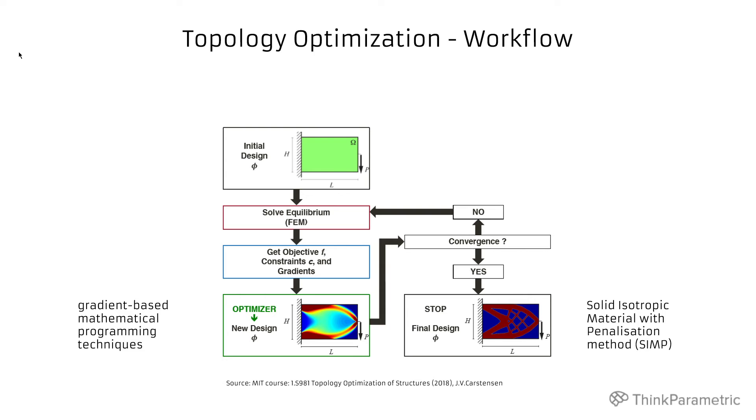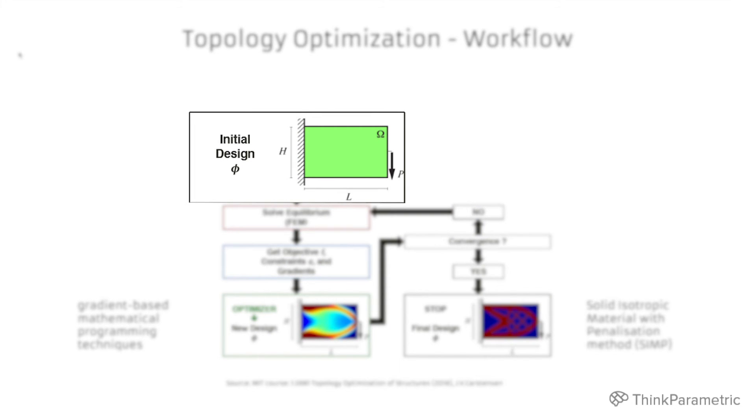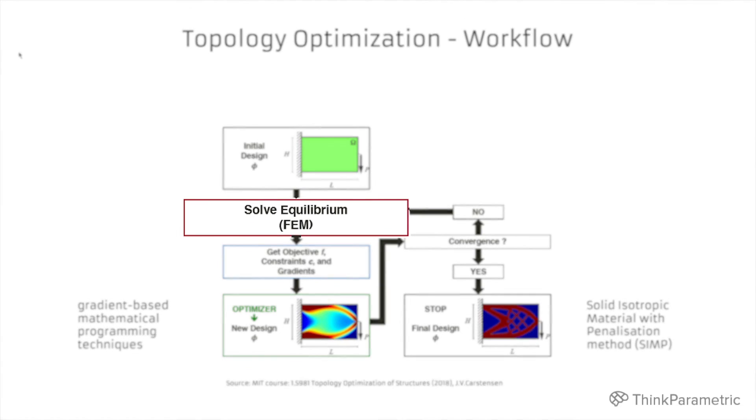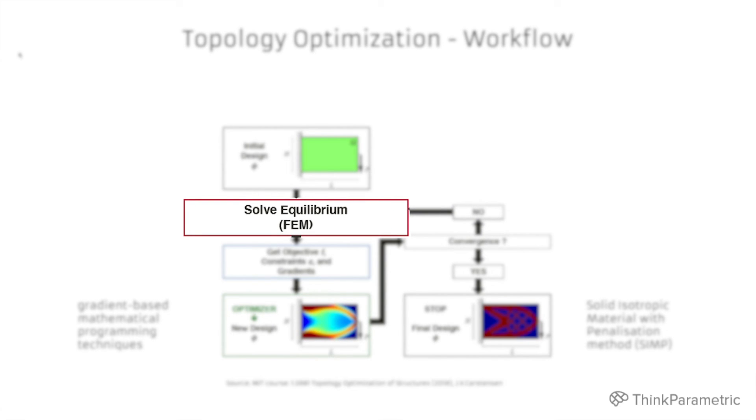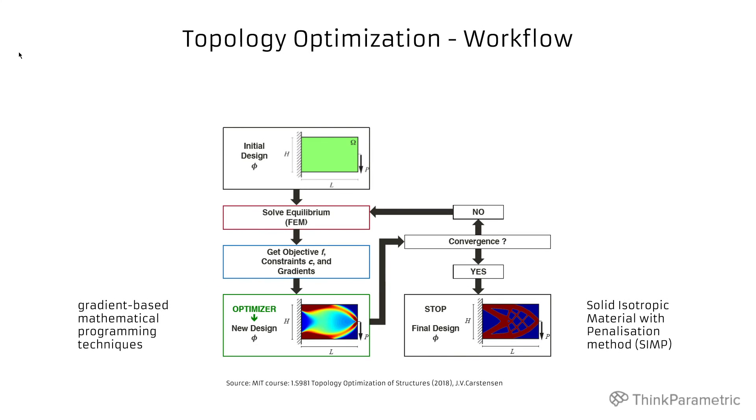So how does that run? Again we have the initial design domain that is a full domain. We have some finite element method to get the forces to get our objectives and our constraints that is volumes. Usually continuum problems are convex problems therefore they have just one global minimum. And then we could use some gradient based mathematical programming techniques as our optimizers.